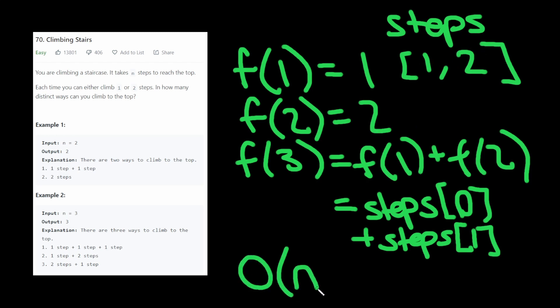This is O of n, because we're just going to be doing some operation n times. And in terms of space complexity, it is O of n if we store in an array.